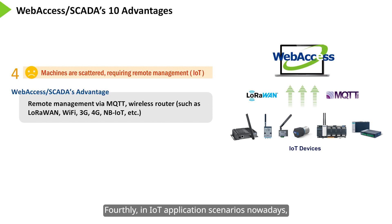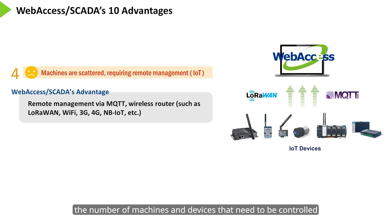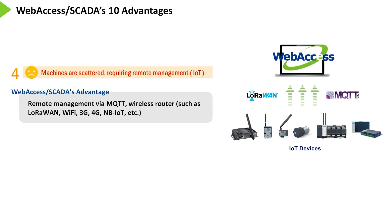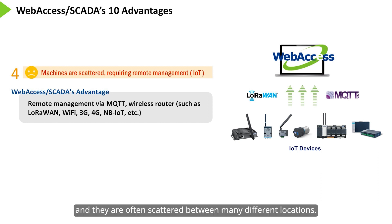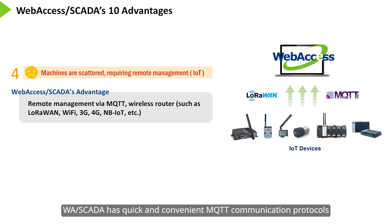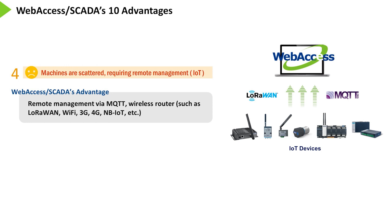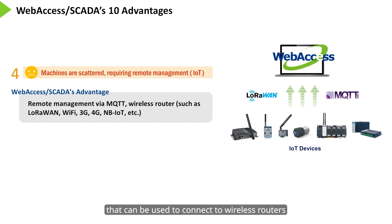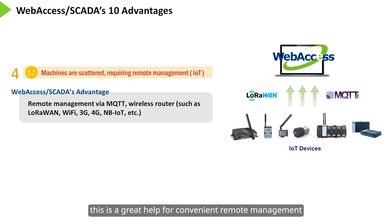Fourthly, in IoT application scenarios nowadays, the number of machines and devices that need to be controlled has increased significantly, and they are often scattered between many different locations. To solve this problem, Web Access SCADA has quick and convenient MQTT communication protocols that can be used to connect to wireless routers such as LoRaWAN, Wi-Fi, 3G, 4G, and NB-IoT. This is a great help for convenient remote management.